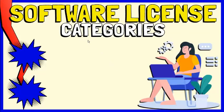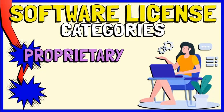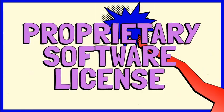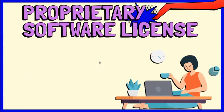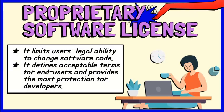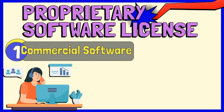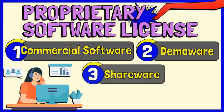There are several categories of software licenses. In this video, we are going to discuss two of them. The majority of software fall under these broad license categories, namely proprietary software license and free and open-source software license. Proprietary software licenses limit users' legal ability to change software code. It defines acceptable terms for end-users and provides the most protection for developers. Proprietary software is distributed as commercial, demoware, shareware, or freeware.